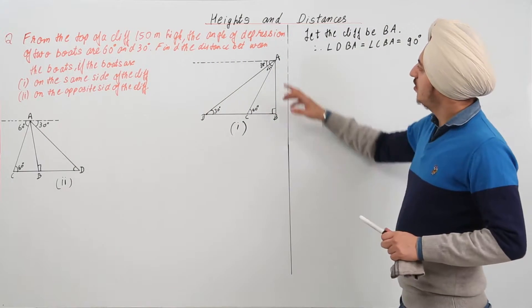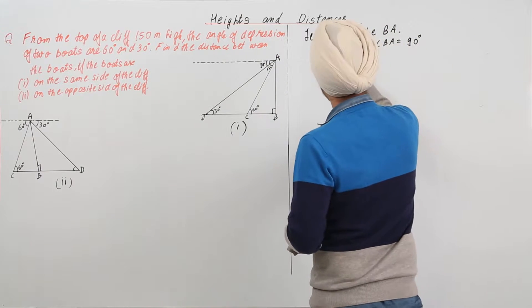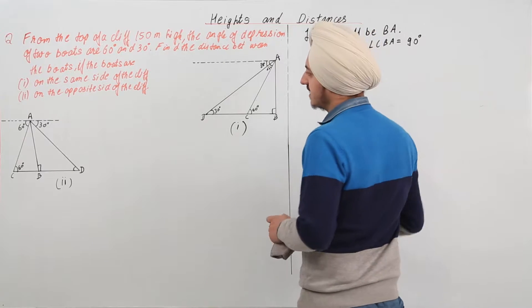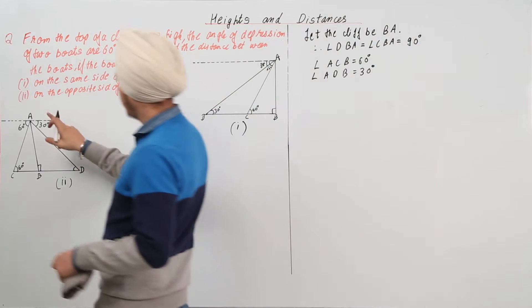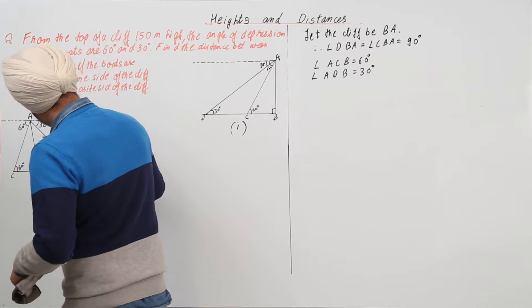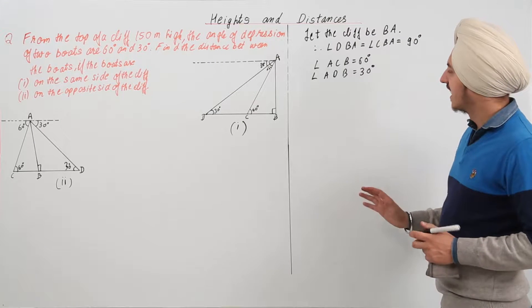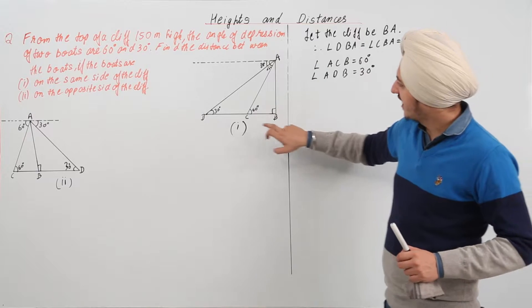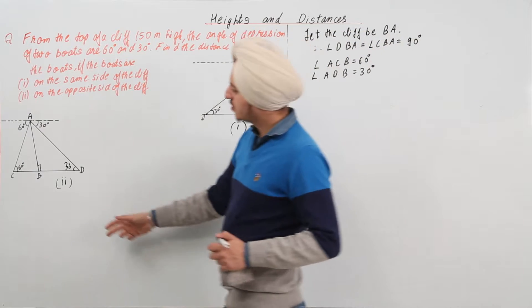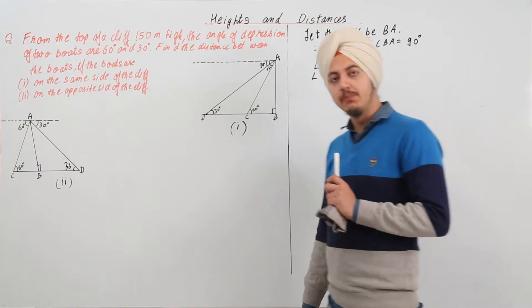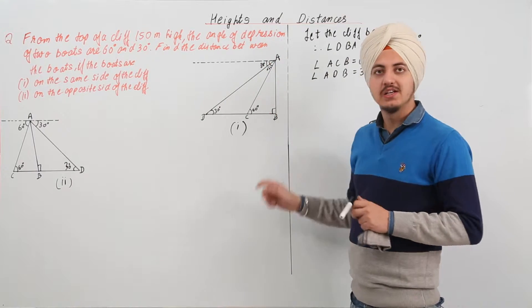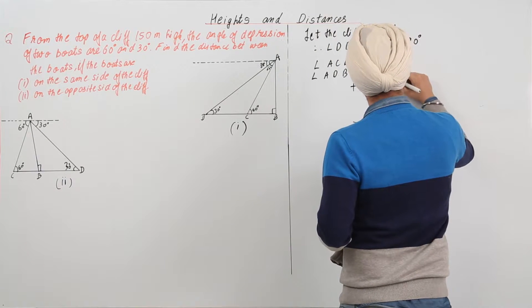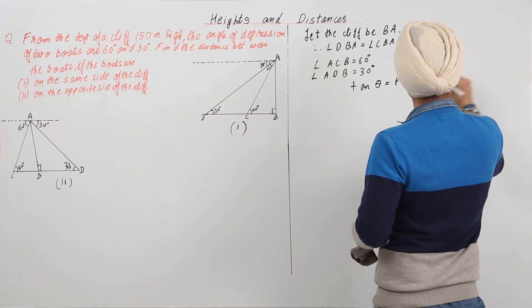We are given that angle ACB is equal to 60 degrees and angle ADB is equal to 30 degrees, and this is true for both figures. To find the distance between the boats, we need to find BD and BC. We know the relation between perpendicular and base is given by tan theta, where tan theta equals perpendicular upon base.